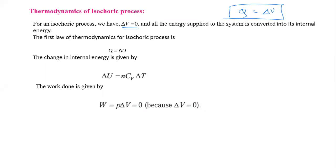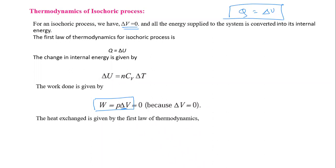Work done is zero here because all the energy is utilized to increase the internal energy. Since work done equals P·ΔV and there is no change in volume, work done is zero. Heat exchange by the first law is Q equals ΔU plus W, but W is zero, so Q equals ΔU equals n·Cv·ΔT.